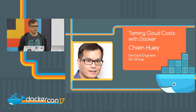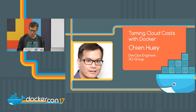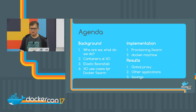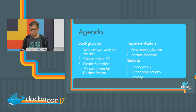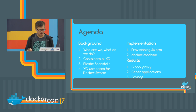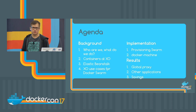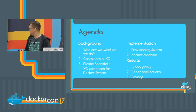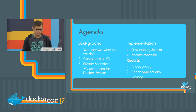Hi, my name is Chen Hui with XO Group, and I'm talking about taming cloud costs. The talk is divided into three parts: a little bit of background on XO Group and what we do, a bit about our history with containers, and then how we implemented Docker Swarm to reduce costs — why we chose that orchestration approach over others — and our preliminary results of what we saved.